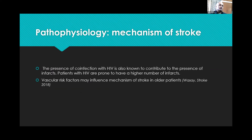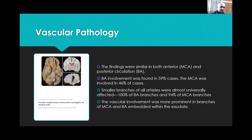Patients co-infected with HIV are more prone to infarcts, as seen in our index case. A study by Vase et al. published in Stroke in 2018 from Pakistan showed that traditional vascular risk factors may influence the mechanism of stroke in older patients with tubercular meningitis. An important landmark autopsy study from PGI Chandigarh examined vascular pathology in 51 cases of TBM, focusing purely on vascular complications.